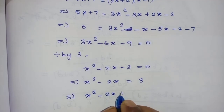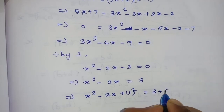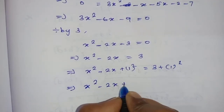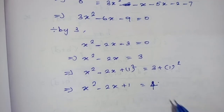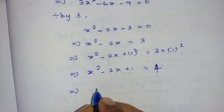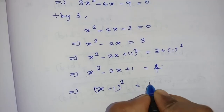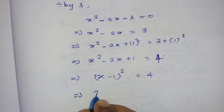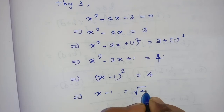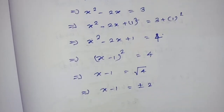So we have x² minus 2x plus 1² equals 3 plus 1². Since 1² is 1, this gives x² minus 2x plus 1 equals 4. This fits the formula a² minus 2ab plus b² which equals (a minus b)². With a = x and b = 1, we get (x minus 1)² equals 4. Taking square root of both sides: x minus 1 equals plus or minus 2.